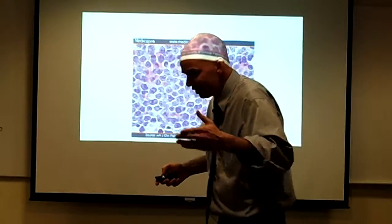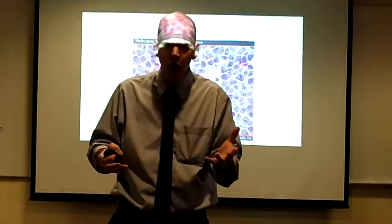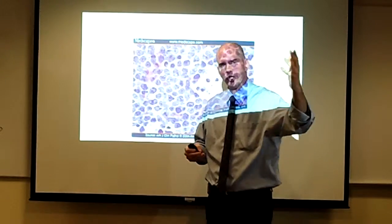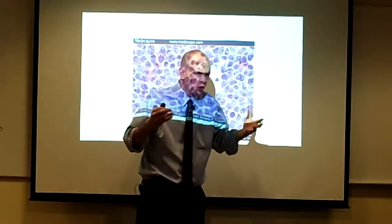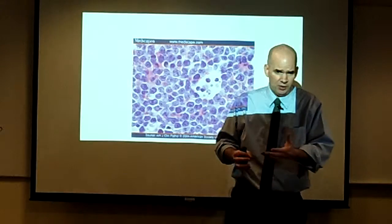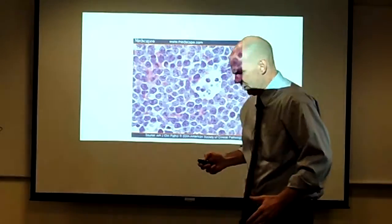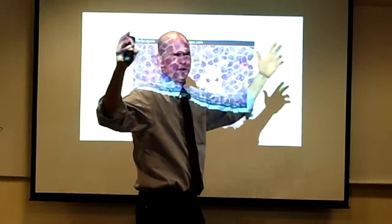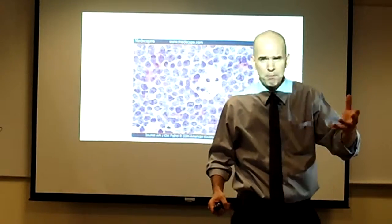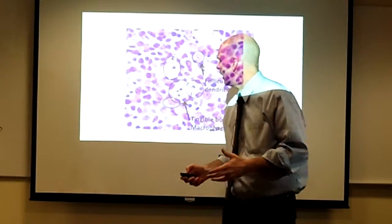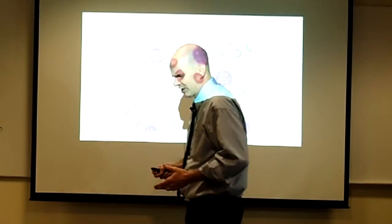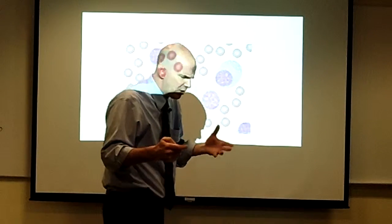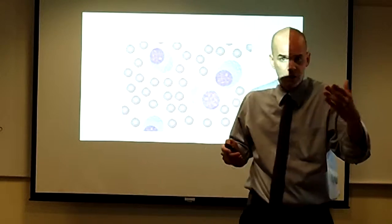If a B cell does happen to survive the gauntlet of somatic hypermutation and affinity maturation, then it gets to graduate from germinal center college. It gets awarded its MUM1 diploma that allows it to differentiate into a plasma cell. So it leaves the germinal center, throws its hat in the air with one last celebratory burst of proliferation as a post-germinal center B cell immunoblast, and then differentiates into a plasma cell. So this basically covers the normal morphology and physiology of lymph nodes.